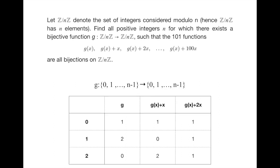Let me try a simple example when n equals 3. I pick a random bijective function g that maps 0, 1, 2 to 1, 2, 0, which is represented in the first column. I try to figure out what g(x)+x and g(x)+2x look like. In this simple case, g(x)+2x is already not bijective.